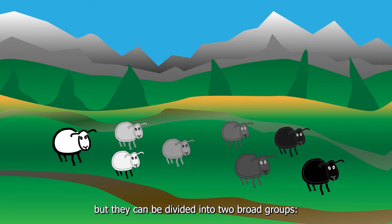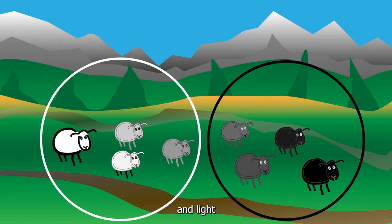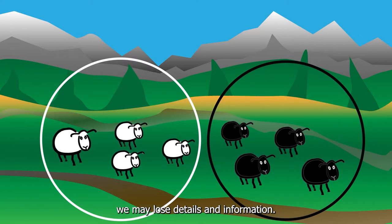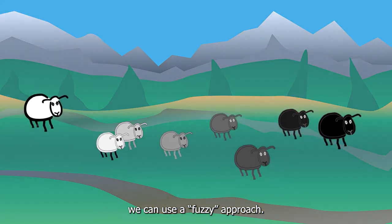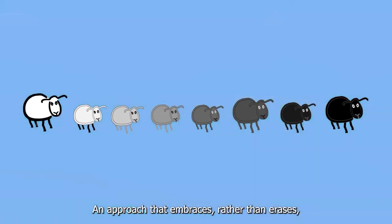However, by doing that we may lose details and information. To avoid this loss of information, we can use a fuzzy approach - an approach that embraces rather than erases the variability of our world and tries to quantify it.